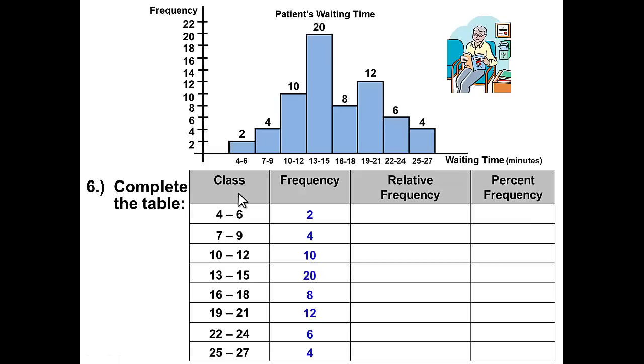And once we have the class and the frequency, we simply can fill in the relative frequency as we have done before. The relative frequency for group 1 would be 2 divided by the total. 2 divided by 66 gives us .030. And remember that the relative frequency is the relative number, which is the decimal form of that comparison.